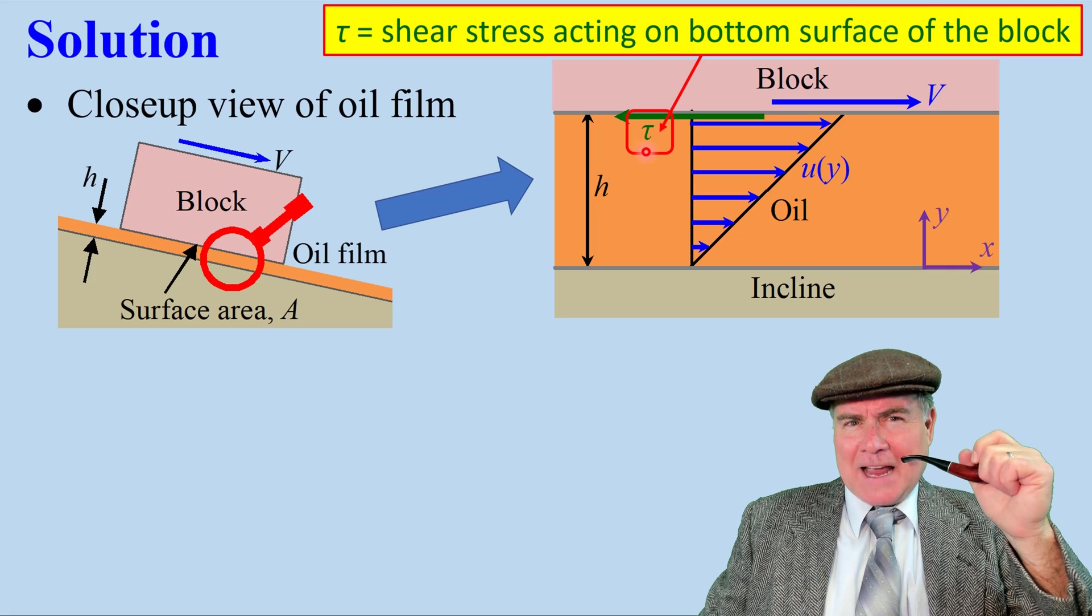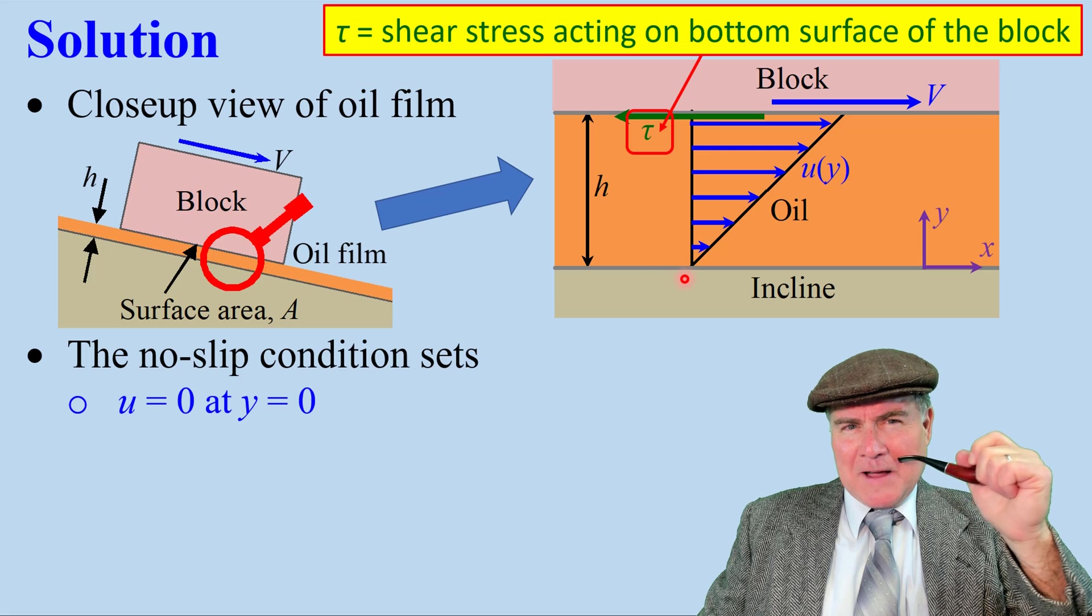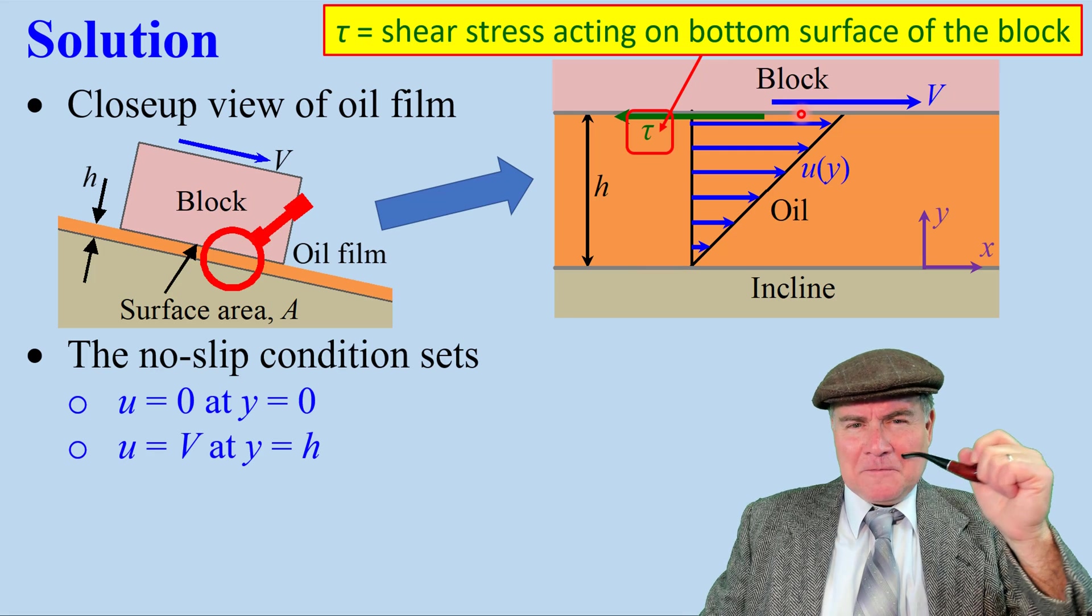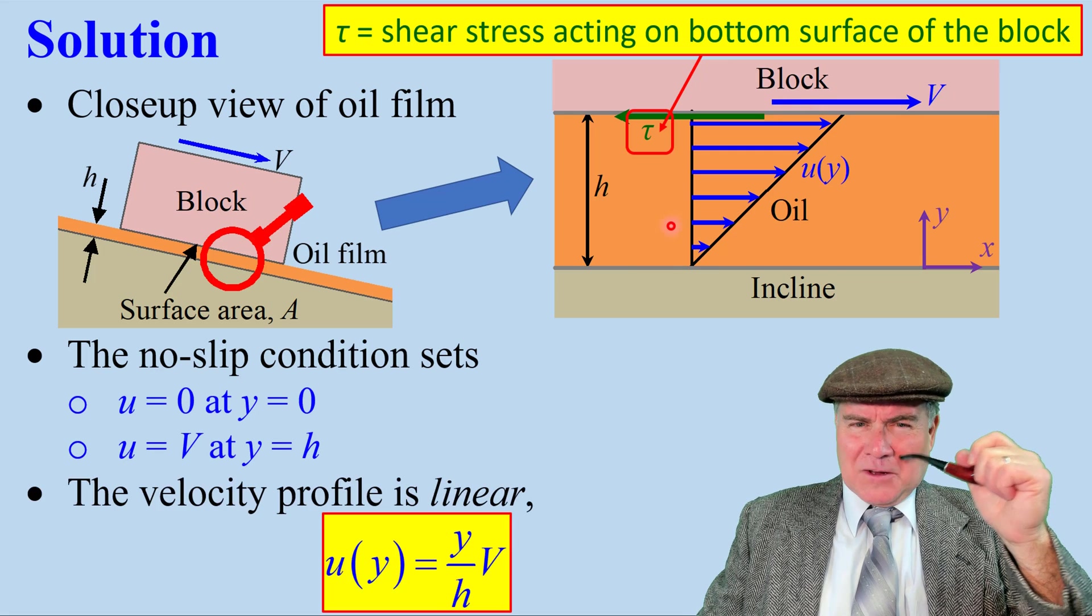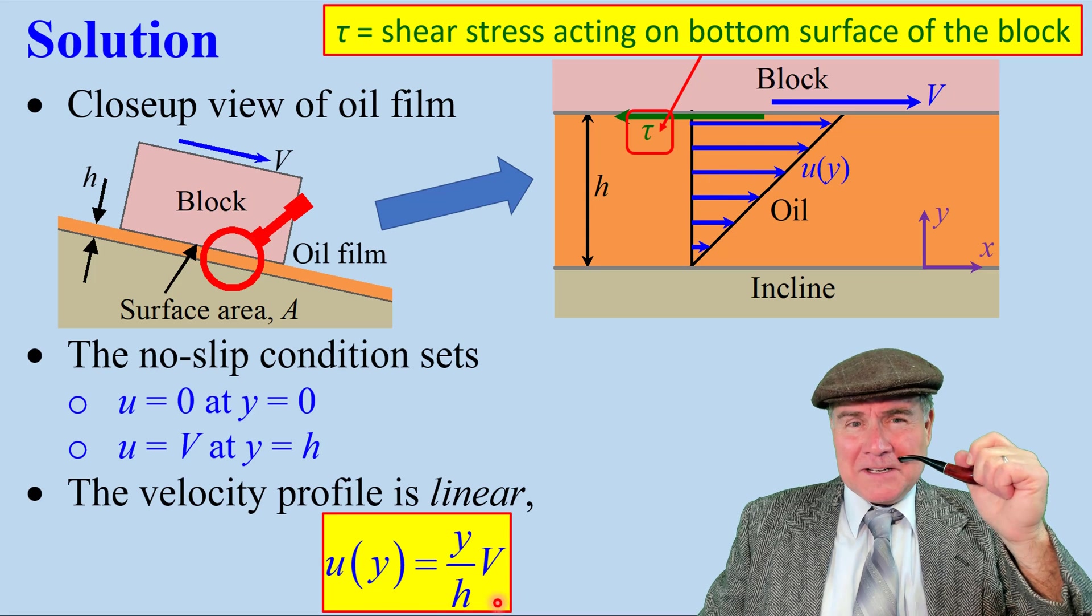Tau is the shear stress acting on the bottom surface of the block. The no-slip condition sets u equals zero at y equals zero and u equals v at y equals h. You can prove that the velocity profile is linear. So u is y over h times v.